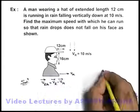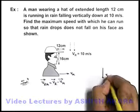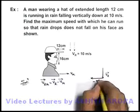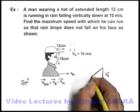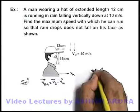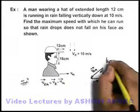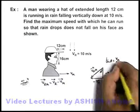So velocity of rain is in downward direction, minus v_m will be in opposite direction, so the resultant direction would be this. It is the velocity of rain with respect to man at an angle theta, where tan theta we can write v_m upon v_r.